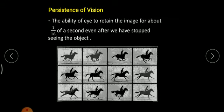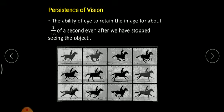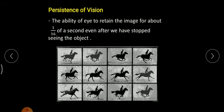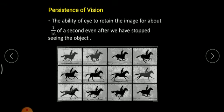The next parameter is persistence of vision. Persistence of vision is the ability of the eye to retain an image for 1/16th of a second. This means that if you are viewing a whiteboard or blackboard and suddenly close your eyes, that image will be retained in your mind for about 1/16th of a second — this happens because of the phenomenon of persistence of vision.